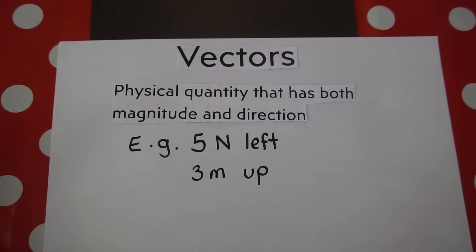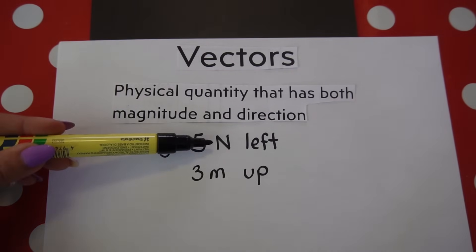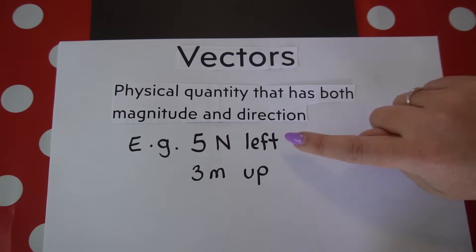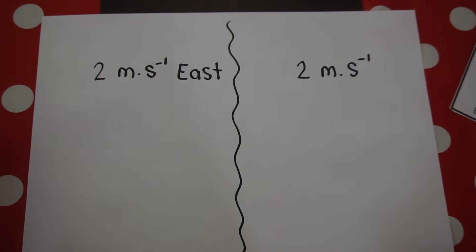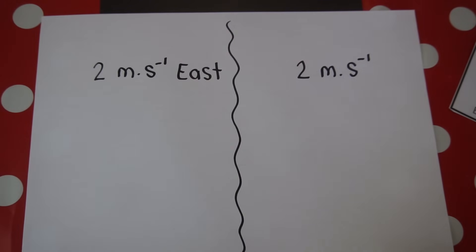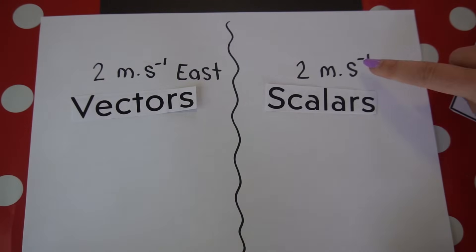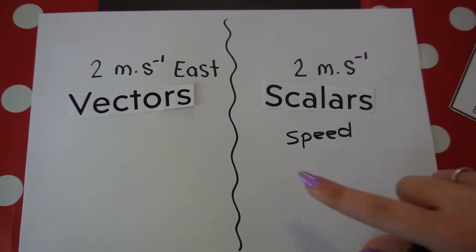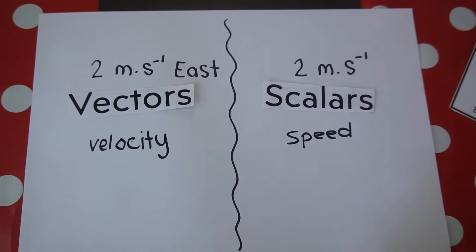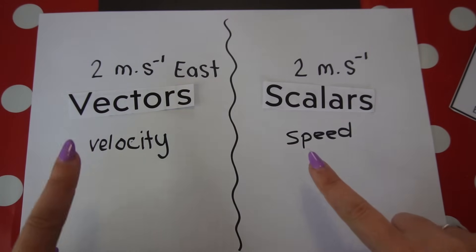These are vector quantities because they have both magnitude — such as five newtons or three meters — and a direction. If I gave you two physical quantities: two meters per second east, and two meters per second with no direction, the one with no direction is a scalar (speed), and the one with a direction is a vector (velocity).